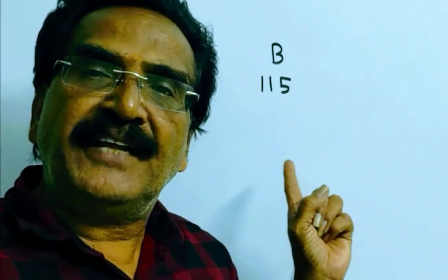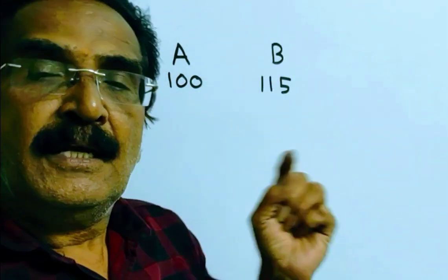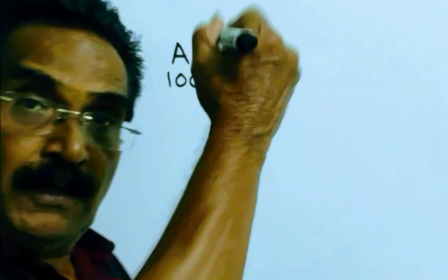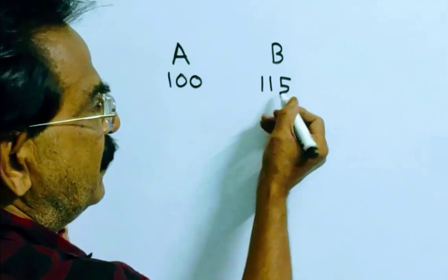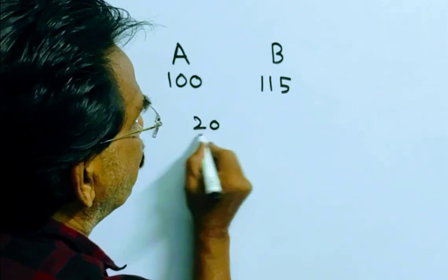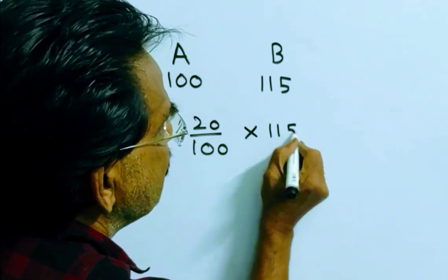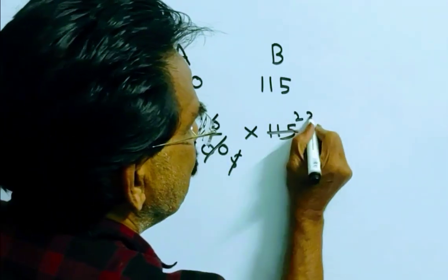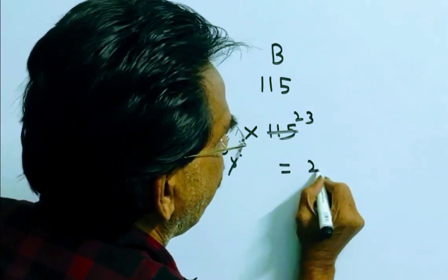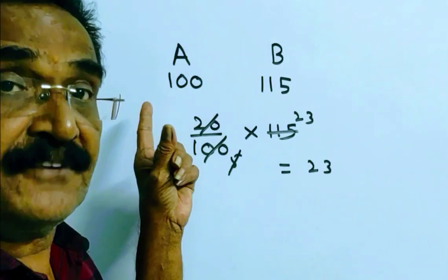Friends, this 115 is the cost price of the toy for B. Now friends, B sold back to A at a profit of 20%. 20% of 115 is equal to 23. So B gets a profit of Rs. 23 if the cost price of A is Rs.